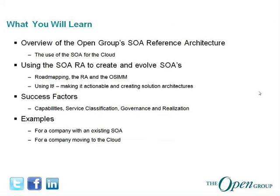I'll start with a quick overview of what we expect to cover. This presentation is an overview of the Open Group SOA reference architecture, and it will also look at the role of SOA in the cloud. It covers how we leverage the SOA RA to create and evolve service-oriented architectures, including road mapping, using the SOA RA, which is now a formal Open Group standard and is in the process of becoming one across the ISO domain, and the OSIM, the service-oriented maturity model. We'll also provide an overview of a sequence of steps to realize and create solution architectures, and briefly look at success factors.